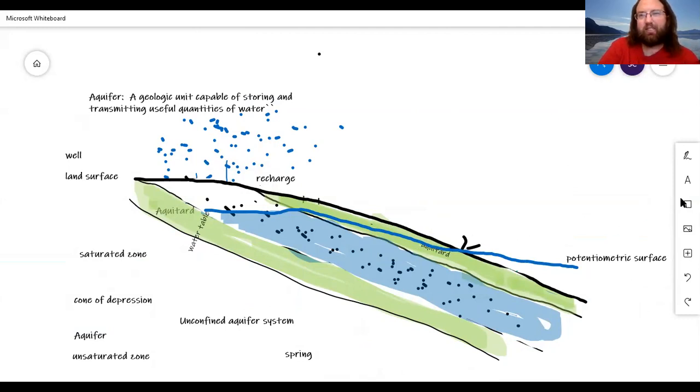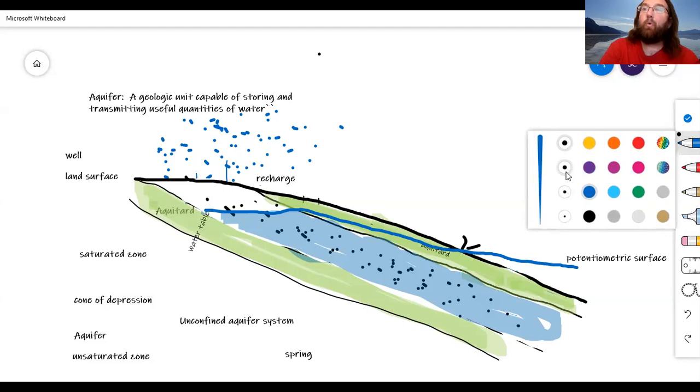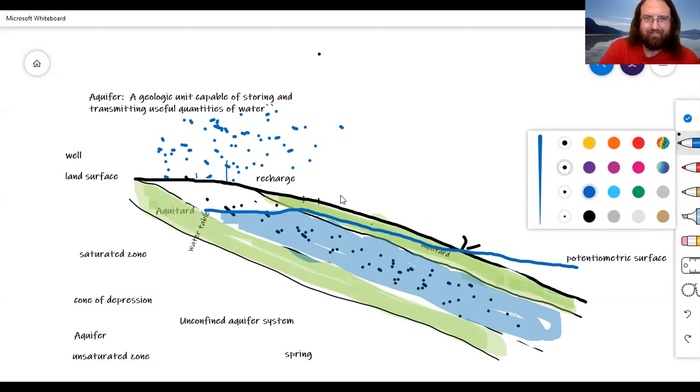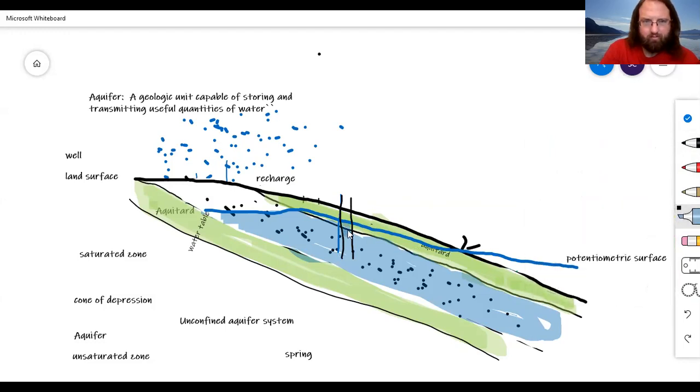This leads to some interesting phenomenon. So, right here, if you were to drill a well, let's drill a little well here. We're going to drill a well right here. Water in the well would rise to right about here. It would rise actually above the confining layer.